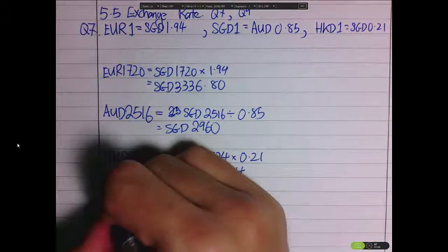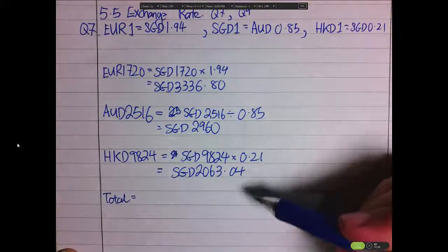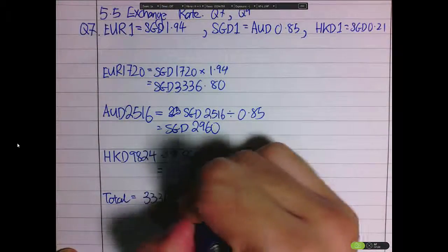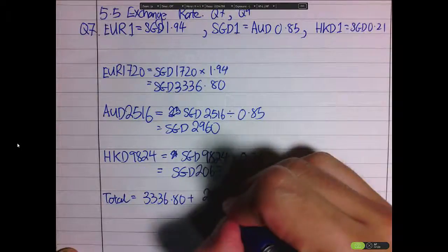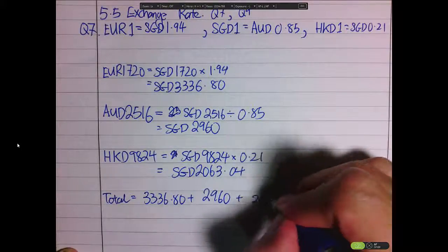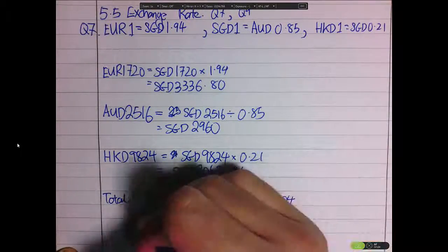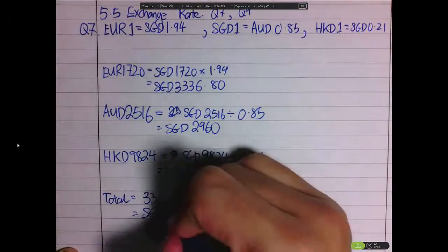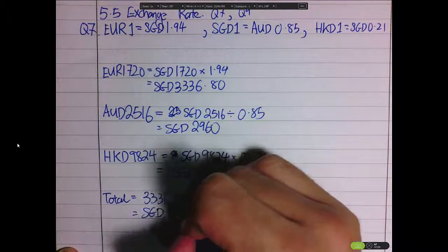So the total is just the sum of these three. And I'll just write 3336.80 plus 2960 plus 2063.04, and total she has in her account is SGD 8359.84.